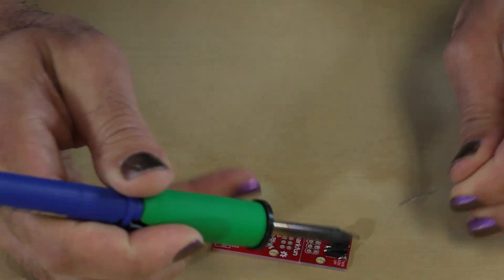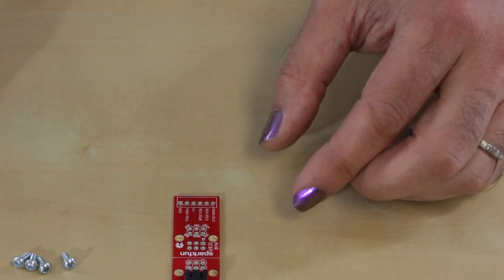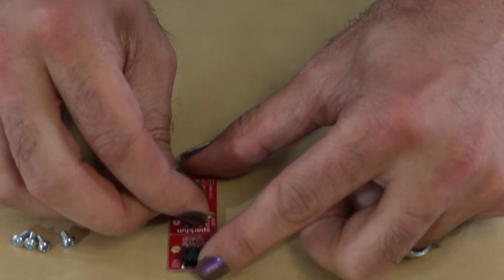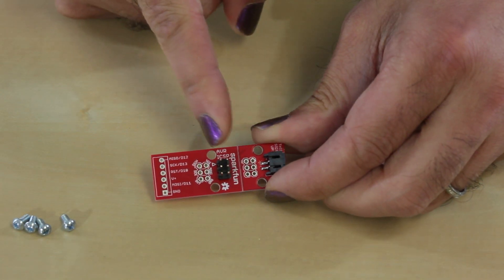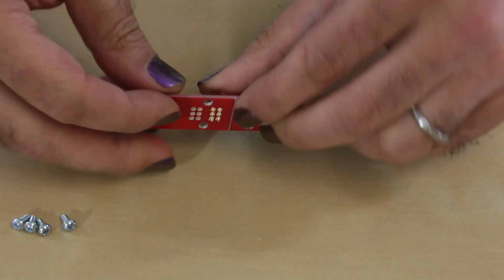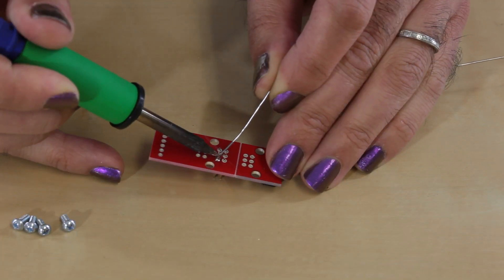So the next step we're going to put this six-pin header on here. That guy goes right there in the middle of those three sets of pads, flip it upside down, tack down each pad.